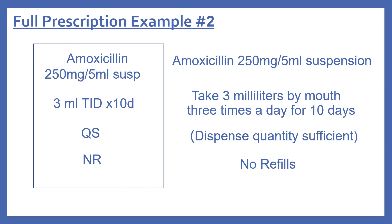One more full prescription example: 'Amoxicillin 250 mg per 5 ml suspension, 3 ml TID ×10D, QS, NR.' This means dispense amoxicillin 250 mg per 5 ml suspension; the instructions are take 3 milliliters three times a day for ten days. QS means dispense the quantity sufficient — you would calculate the amount to dispense. And NR means no refills.